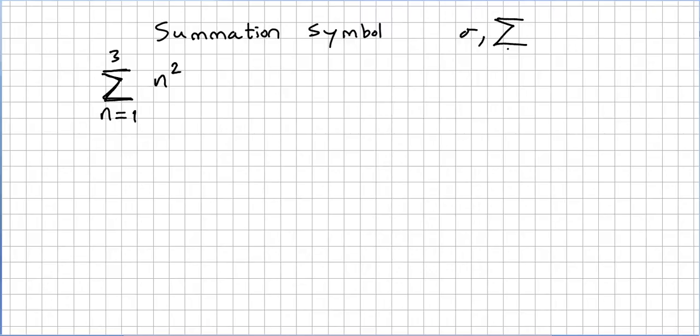For instance, if you have this summation from n equals 1 to 3 of n squared, you start at 1: 1 squared plus—n is 1 now—plus 2 squared, and now 3, and 3 is the last one.